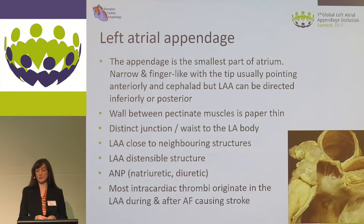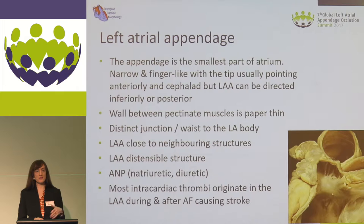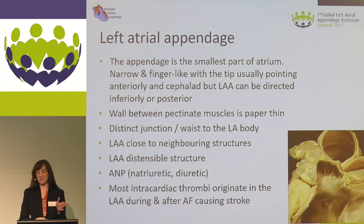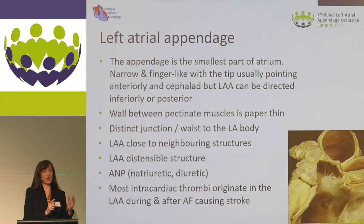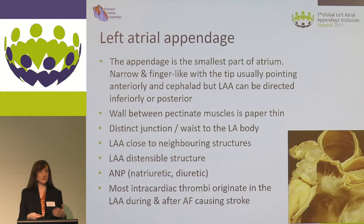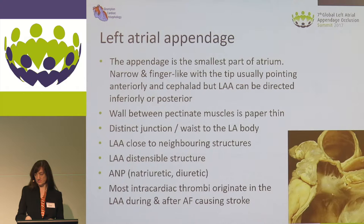The appendage is the smallest part of the atrium. It's narrow and finger-like — that's the general term we use — and the actual tip can be in any different direction. In between the pectinate muscles, the wall is very, very thin. It's fibrous tissue. It can be transilluminated in the pathology setting, and the appendage itself is close to very important neighbouring structures and it's distendable. ANP is 40 times higher in the appendage itself than in the rest of the atrial body. It's a diuretic, used for removal of sodium. And most intracardiac thrombi originate in the left atrial appendage.